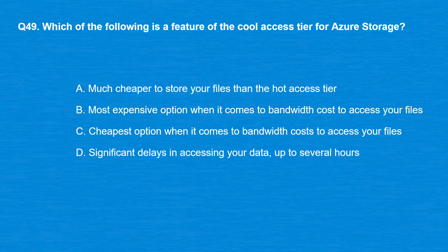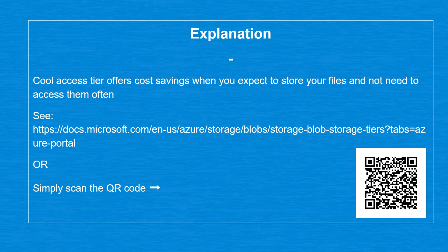Question 49: Which of the following is a feature of the Cool Access Tier for Azure Storage? Option A: Much cheaper to store your files than the Hot Access Tier. Option B: Most expensive option for bandwidth cost to access your files. Option C: Cheapest option for bandwidth cost to access your files. Option D: Significant delays in accessing your data, up to several hours. The correct answer is Option A — much cheaper to store your files than the Hot Access Tier. Cool Access Tier offers cost savings when you expect to store files without accessing them often.